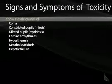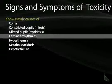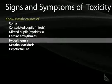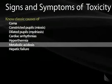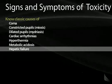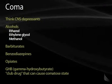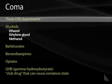It's important to know the classic causes of coma, miosis, mydriasis, arrhythmias, hyperthermia, metabolic acidosis — both anion gap and non-anion gap — and hepatic failure. These are commonly tested on USMLE. When you see a patient that has a coma, the most important things to remember are which medications the patient might have taken.